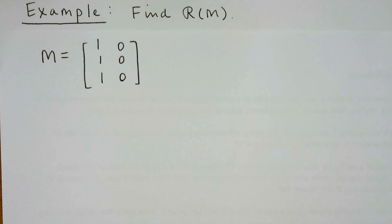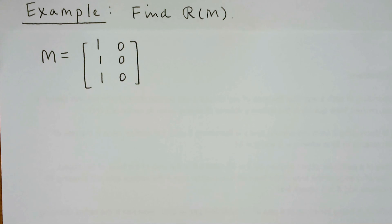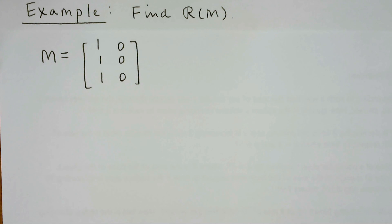This third matrix has a column of all zeros and it's tall. Thinking about all possible combinations of the columns: any combination of [1,1,1] and [0,0,0] is just some multiple of [1,1,1]. So that column of all zeros isn't actually impacting the range at all — it's not adding anything new.